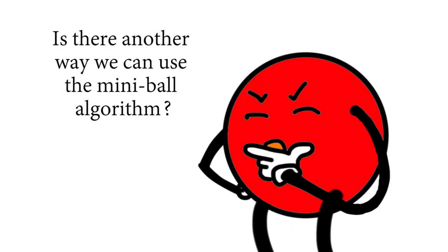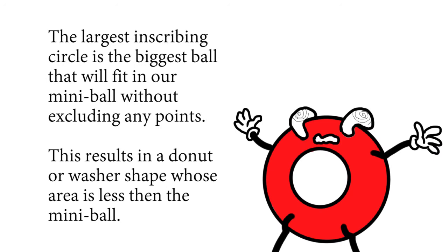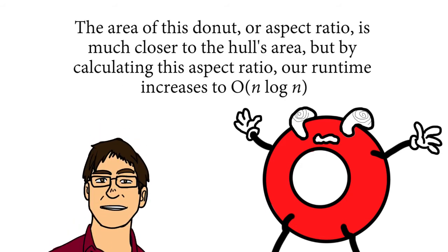Is there another way we can use the miniball algorithm? We can by subtracting the largest inscribing circle to lower the area enclosed by the miniball. The largest inscribing circle is the biggest ball that will fit in our miniball without excluding any points. This results in a donut or washer shape whose area is less than the miniball. The area of the stone aspect ratio is much closer to the hull's area, but by calculating this aspect ratio, our runtime increases to O(nh).